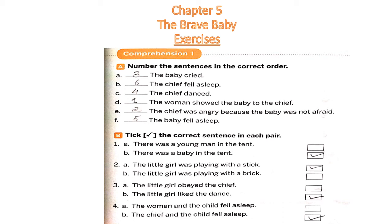In today's video we will be solving the exercises of Chapter 5, that is 'The Brave Baby'. Comprehension 1 — let's see: number the sentences in the correct order. The sentences are given here but they are not in order, so we have to number them in the correct form.